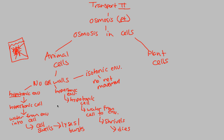Plant cells are a little bit different — plant cells have cell walls. And because they have cell walls, they are going to have a slightly different sort of outcome. Let's do our hypotonic environment first. If we have a cell wall and we have a plant cell and we put it into a hypotonic environment, we're going to have a hypertonic cell, of course, because the environment is hypotonic — just like our animal cell. But the consequence is going to be a little different.